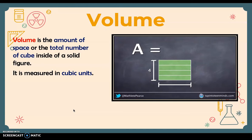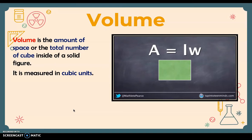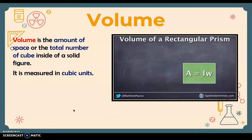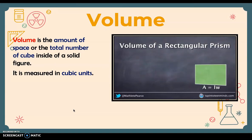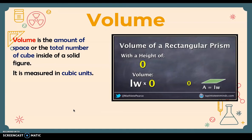Looking at one more example: if our length is four, we divide the shape horizontally into four pieces, and with a width of six we divide vertically into six pieces, giving us an area of 24 units squared. Now that we've looked at finding the area of the base, let's see how this relates to the volume of the rectangular prism. The area of the base is essentially the volume of the prism with a height of zero.